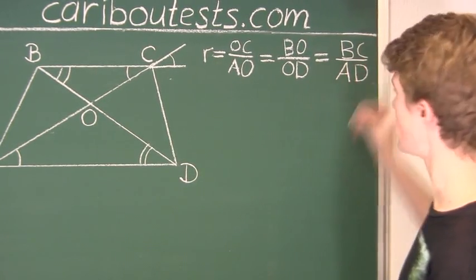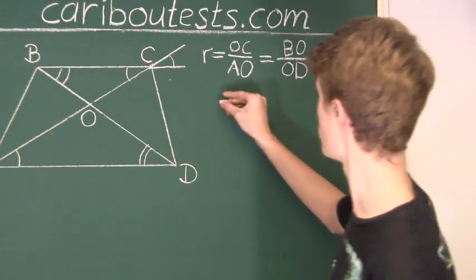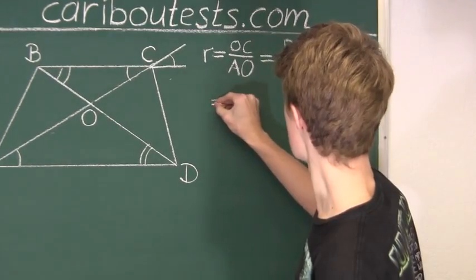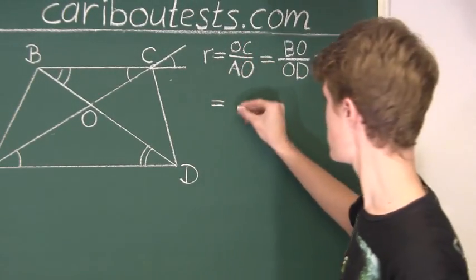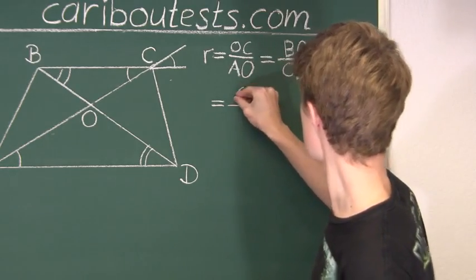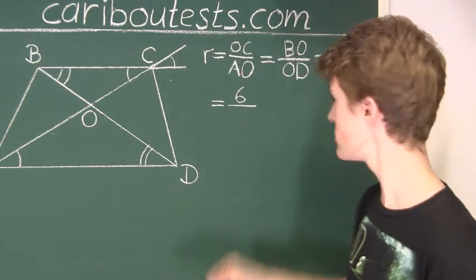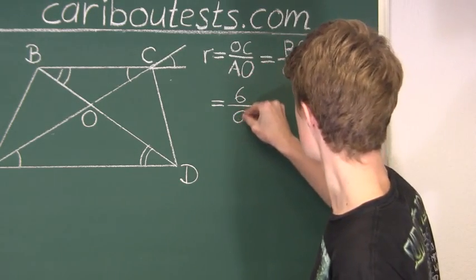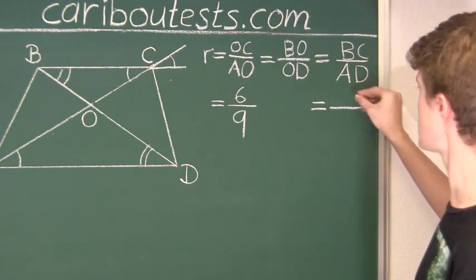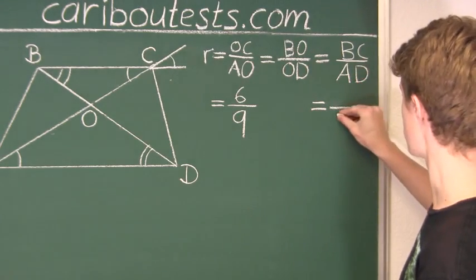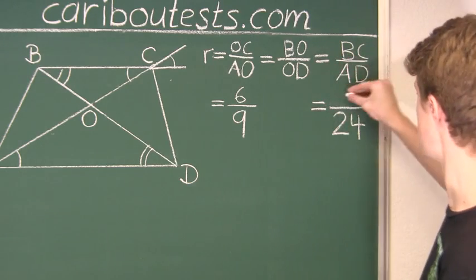Okay, so now, we can substitute in values for what we know. And from the question, we know that OC is 6 centimeters. And we know that from the question, it states AO is 9 centimeters. And the question also tells us that AD is 24, and well, we want to find out BC.